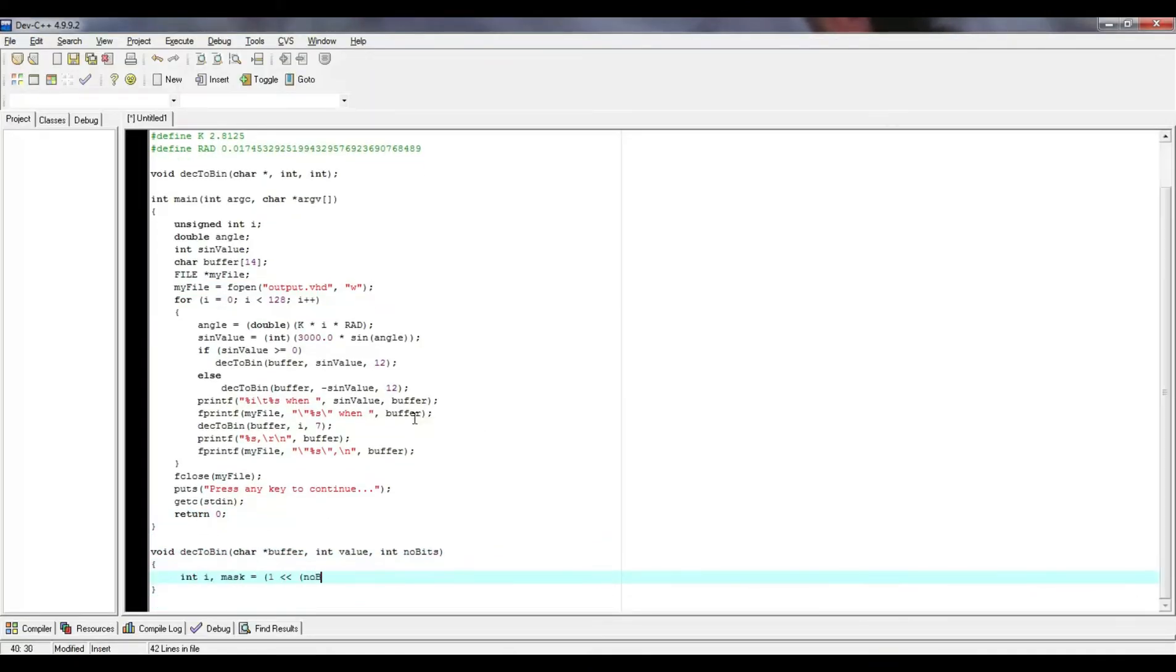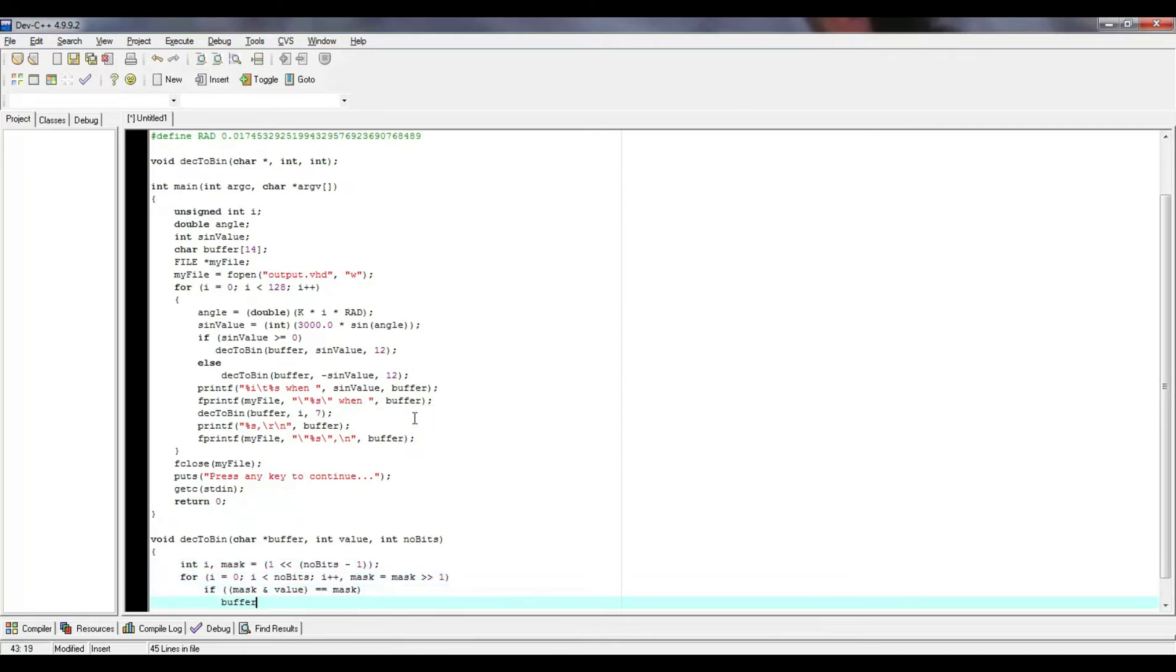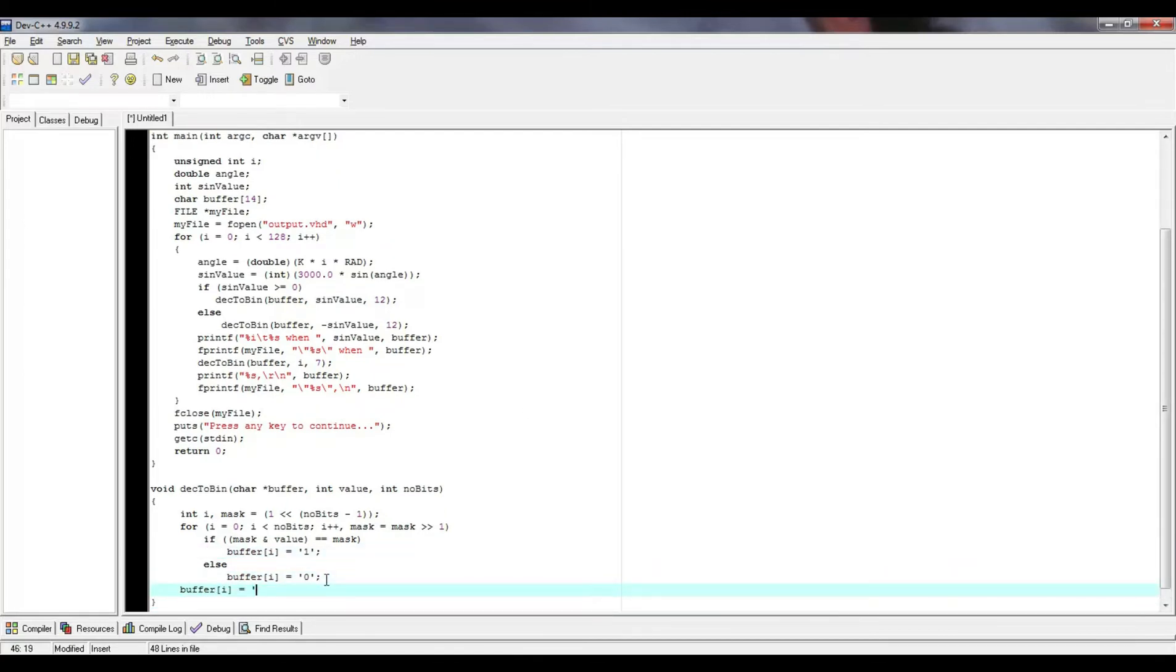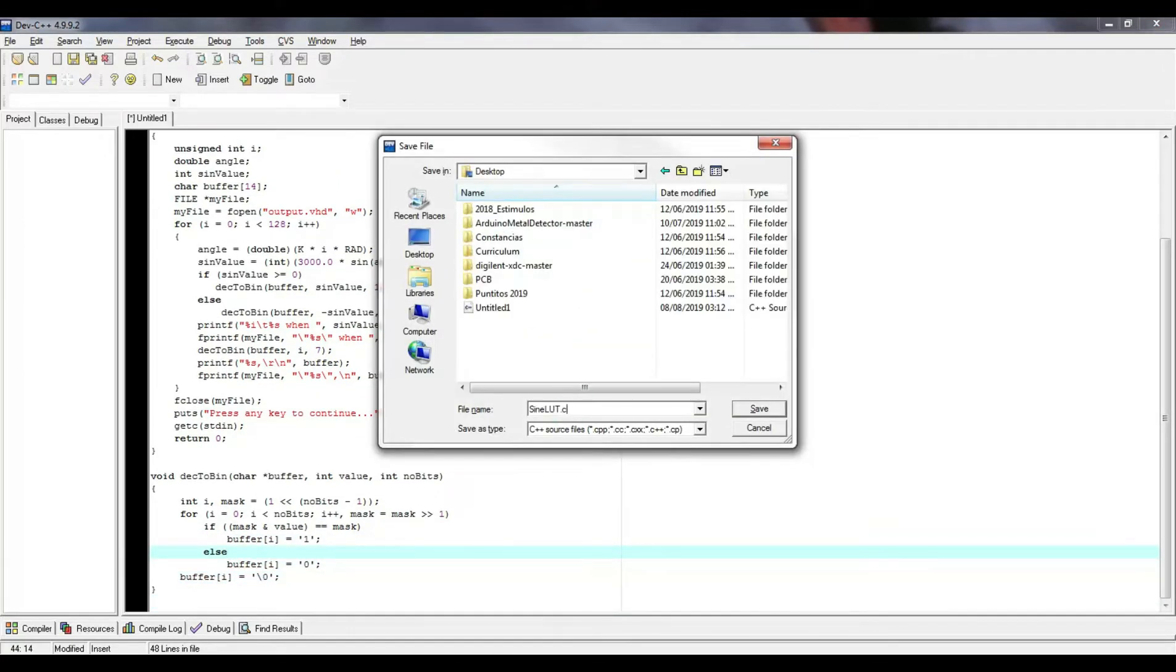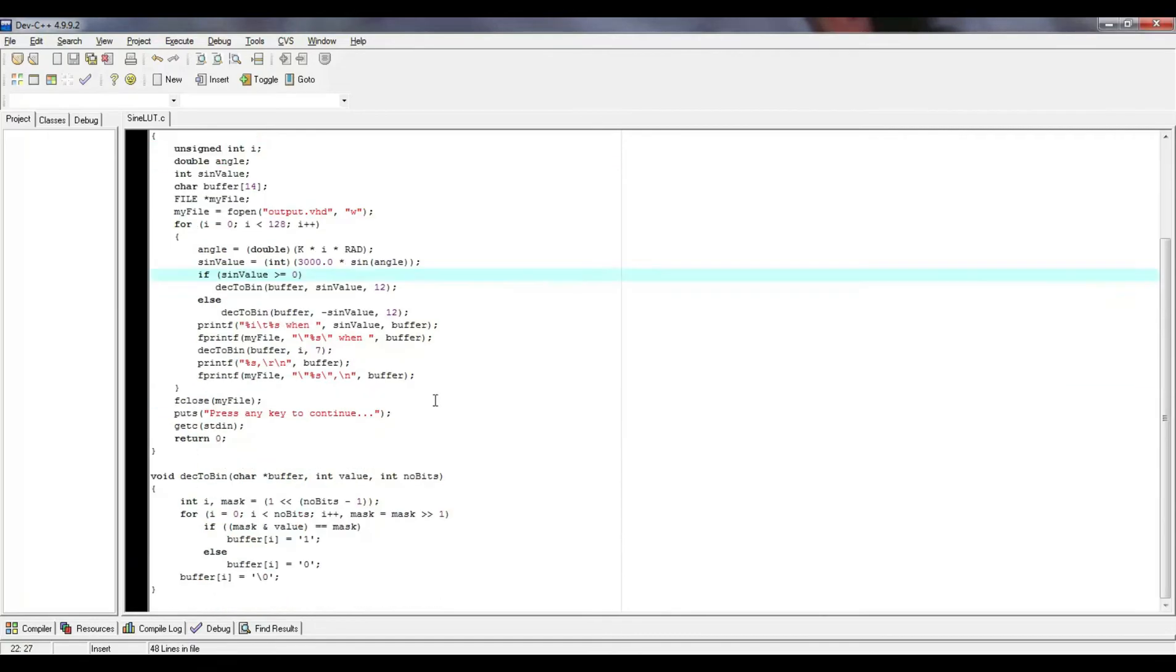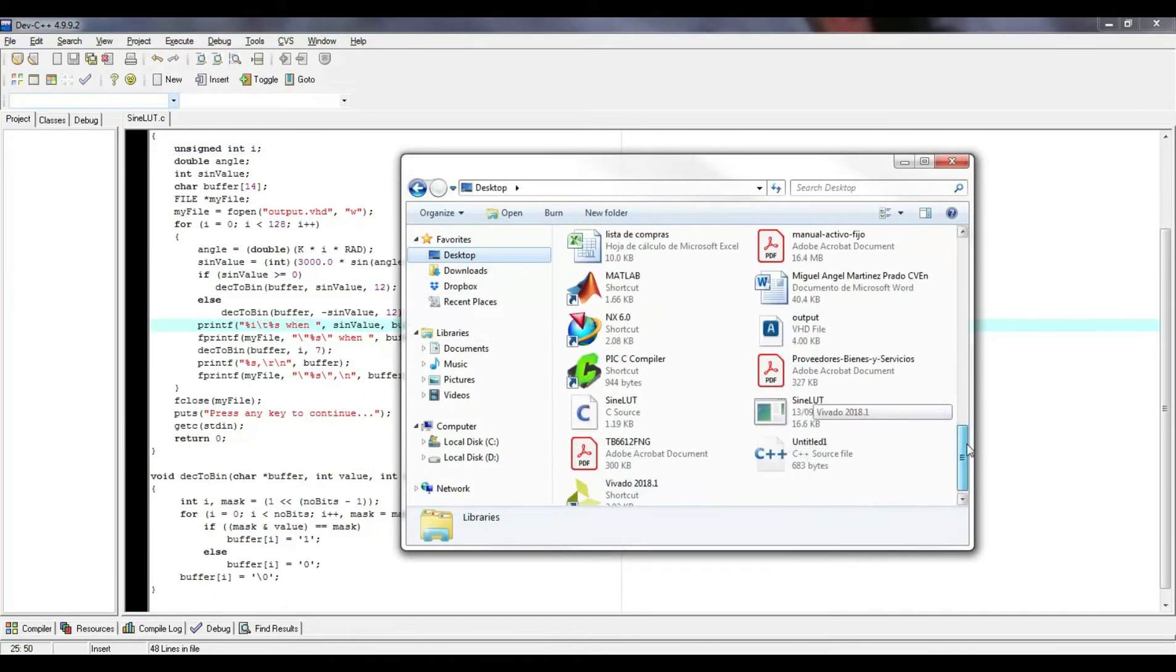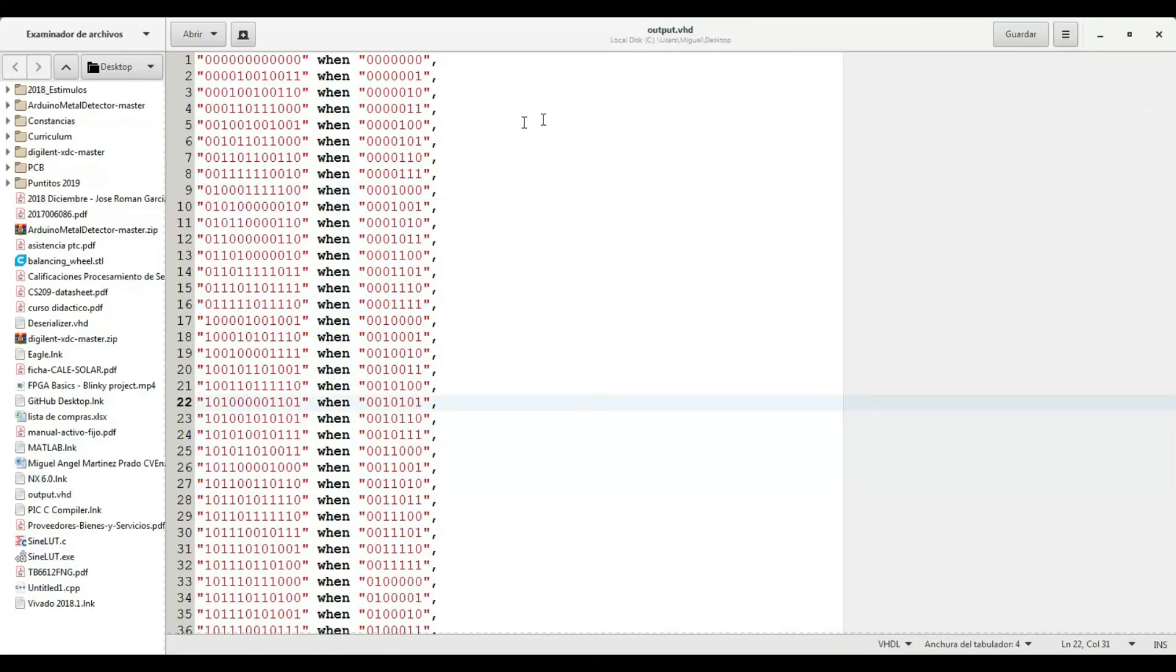To list the 128 sine points, I prefer to write a program in C to compute the sine, multiply per 3000, convert to binary, and to write such values within an HDL file. It's worth programming time because otherwise, it would be impossible for me to type all those values without making one single mistake.